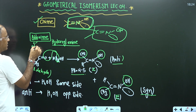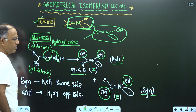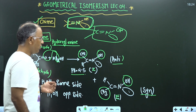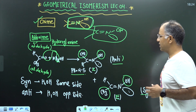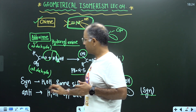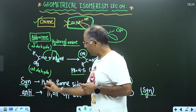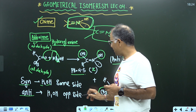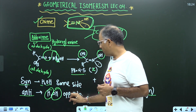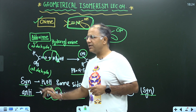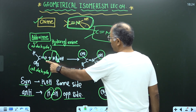This oxime is known as aldoxime. Aldoxime means an oxime prepared by aldehyde and hydroxylamine. Now there is a different type of nomenclature in oxime — we will use a new type called syn and anti-oxime. If hydrogen and OH are on the same side, it is known as syn-oxime. If H and OH are on opposite sides, it is known as anti-oxime.